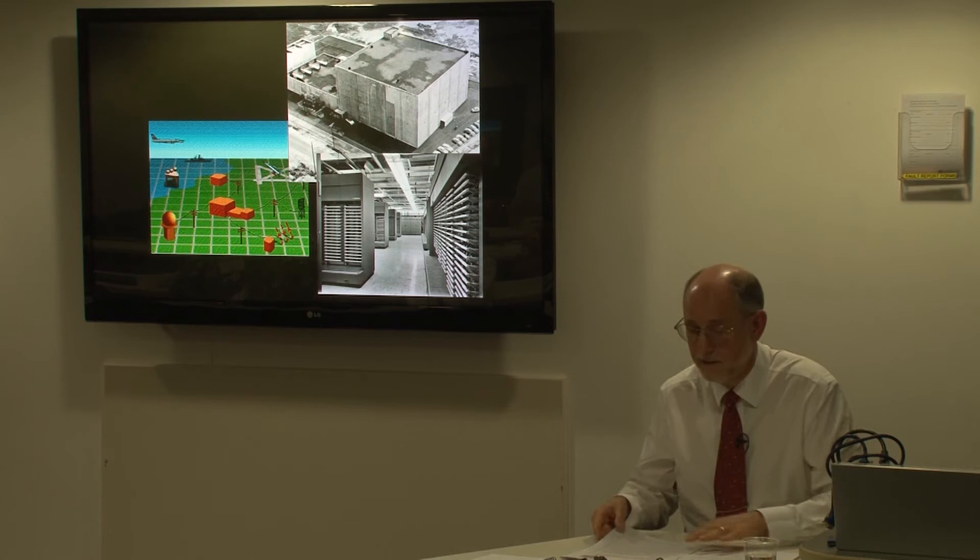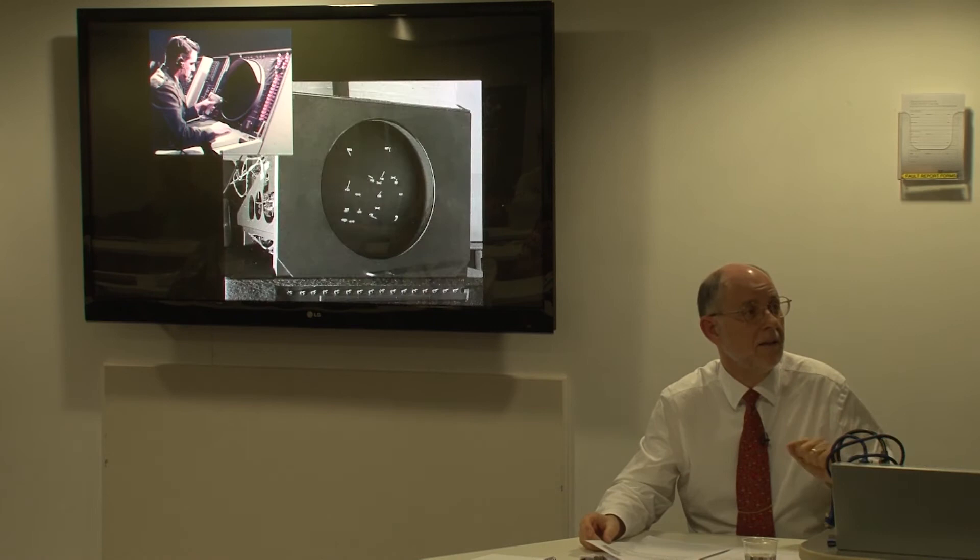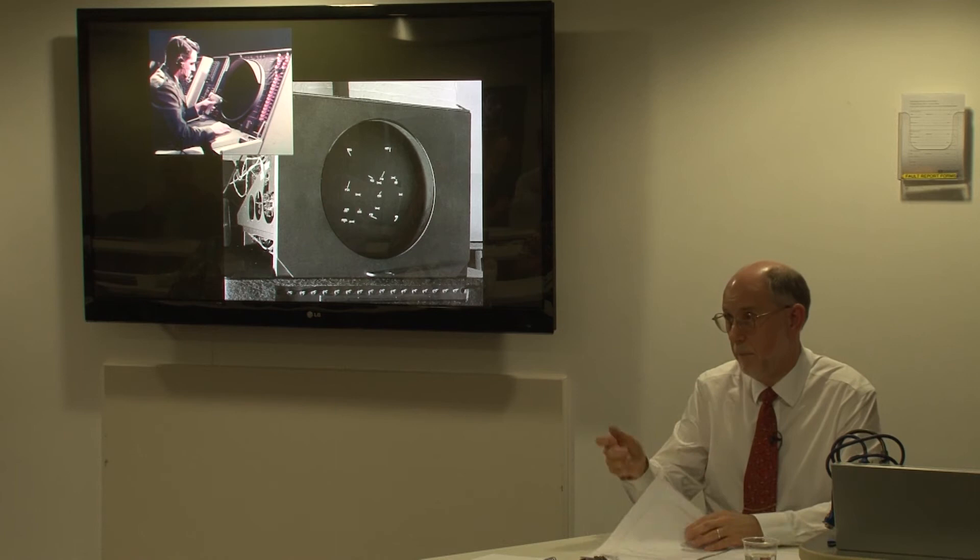Data was presented to operators as real-time displays on cathode ray tubes with some input coming from this light pen pointing device—key innovations in interactive computing. Here is the screen that the operators saw. You could point at targets and get more information about them. Here is the SAGE control room. The last SAGE computer center was decommissioned in 1983. SAGE operated for 25 years. The individual centers were operational for 99.8% of the time—that's out of operation for about 17 hours per year. Jay and his colleagues were always very proud of that level of operational uptime.